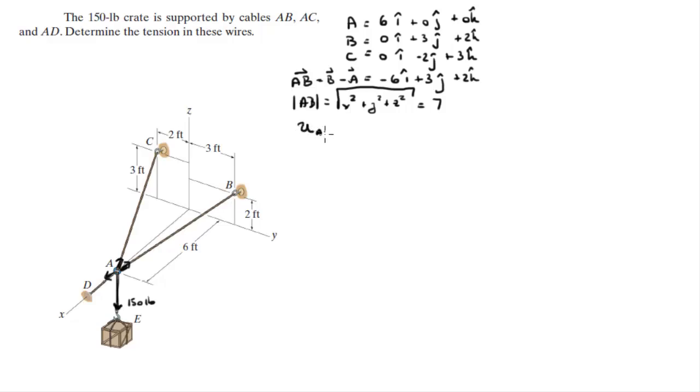And the unit vector a, b is given by the vector a, b divided by its magnitude. So basically you're going to divide each of these Cartesian values by 7, and you're going to get the unit vector. And it comes out to be negative 0.857 in the i plus 0.429 in the j plus 0.286 in the k. That's for a, b.